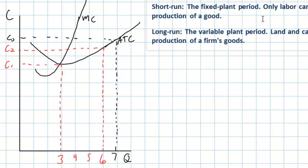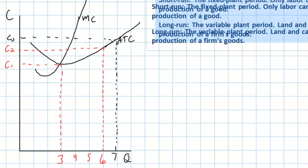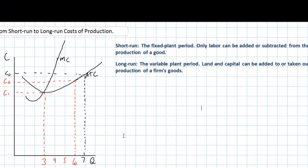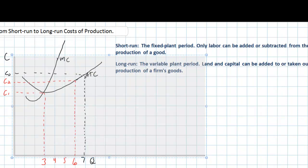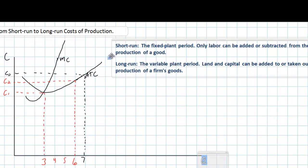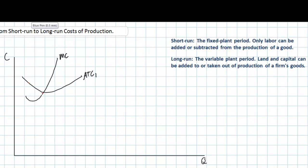Let's assume that this firm's production was taking place with only one factory — let's say it's an airplane manufacturer. With one factory, it was able to produce three airplanes at a very low average total cost, but six airplanes at a relatively high average total cost. This firm needs another factory if it wishes to produce more than six airplanes. So I'm going to extend the quantity axis so we can see what happens when this firm adds additional factories.